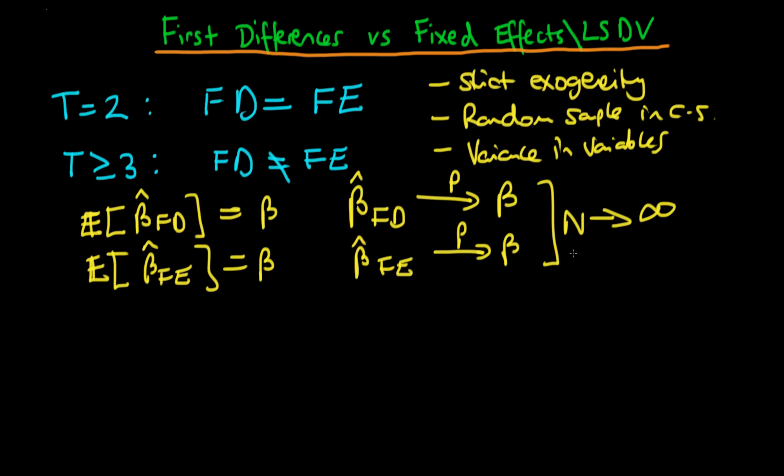The criterion we can actually use is to look at their relative efficiency, and it turns out that their relative efficiency depends on whether we have serially uncorrelated errors in our original model.